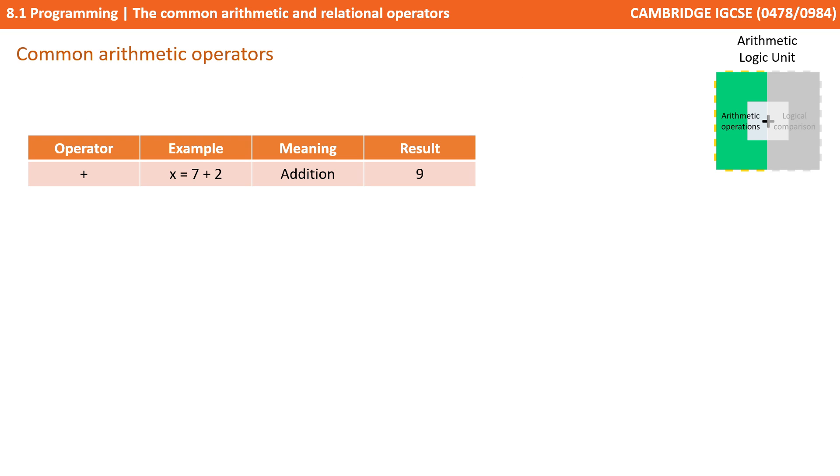Let's start by looking at the arithmetic operations. First, we have plus, so that's obviously addition. So in here, where we've got 7 plus 2, x would be equal to 9.